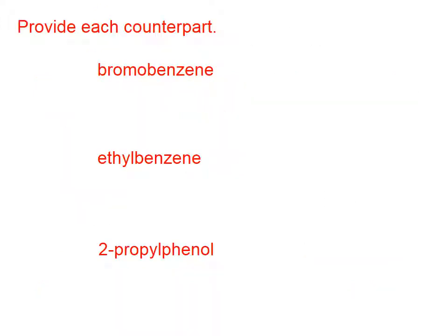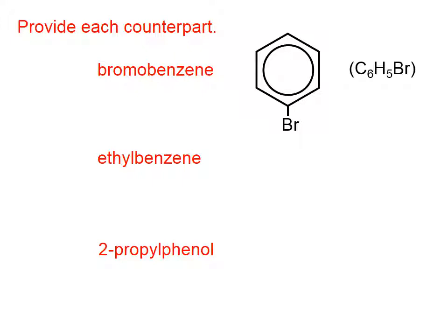Let's draw the structure for bromobenzene. We'll start by drawing benzene, and then we have a bromo substituent. It doesn't matter where that substituent is hanging off. If we were to count atoms here, we have six carbons, one bromine, and then there are hydrogens hanging off of each of the other carbons. If we're calculating the molar mass, for example, we need to know how many carbons, how many hydrogens, how many bromines, so it is a good skill to be able to do this.